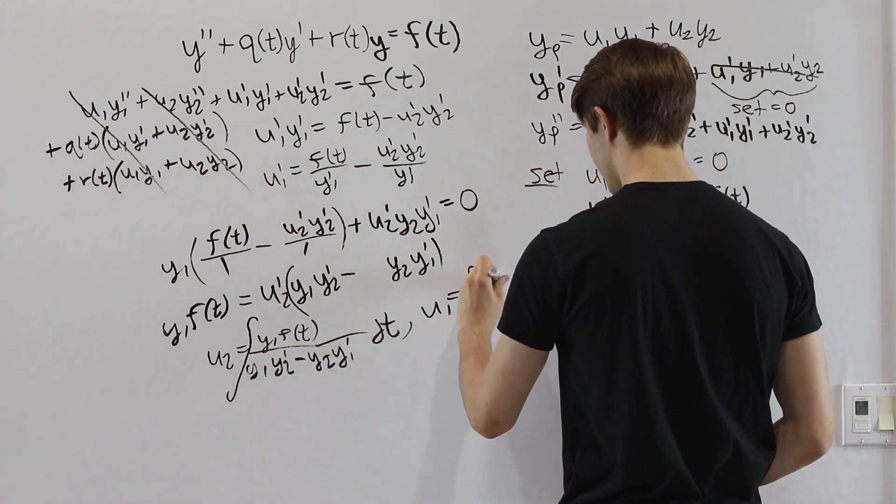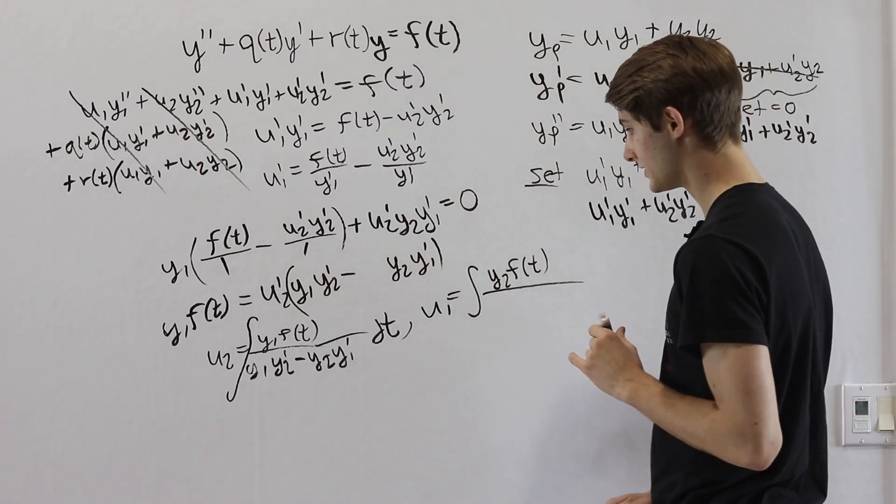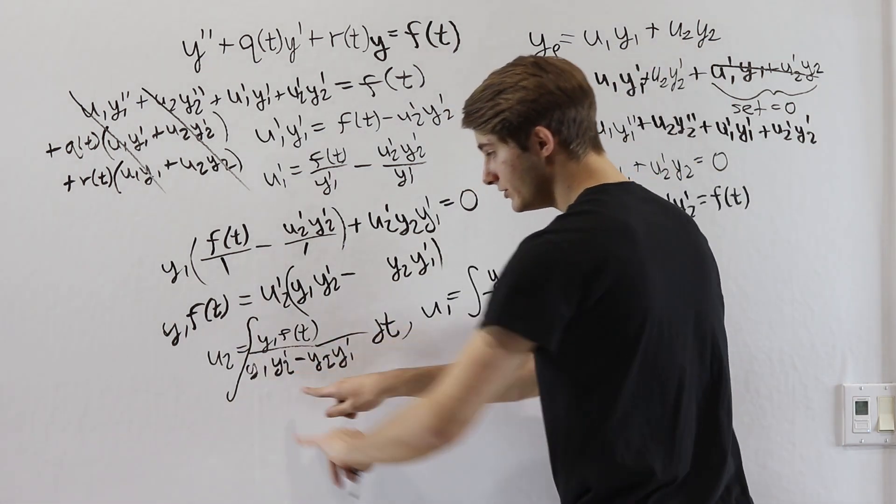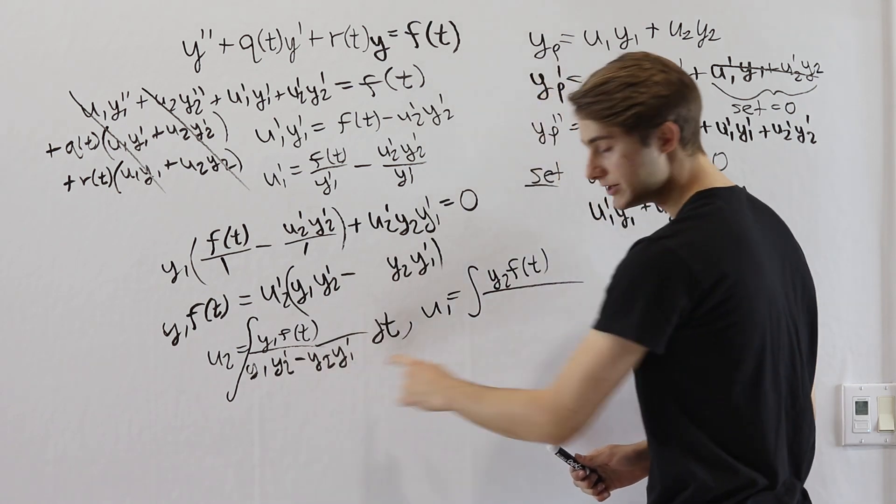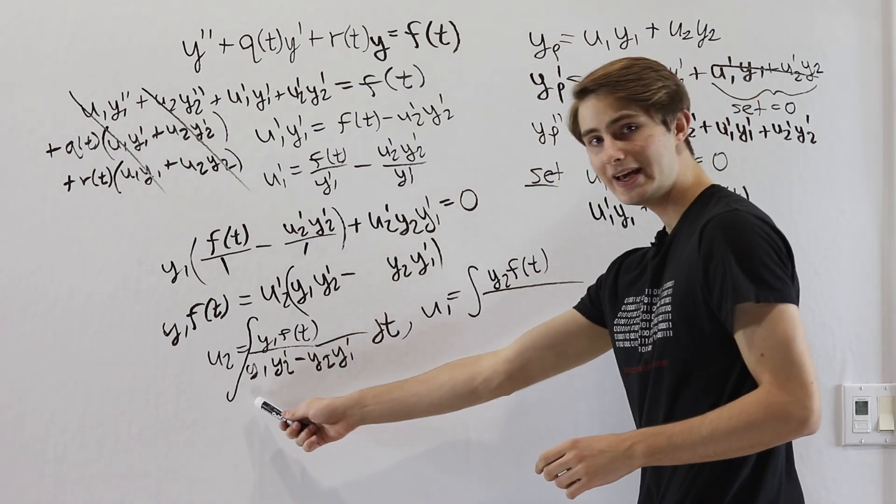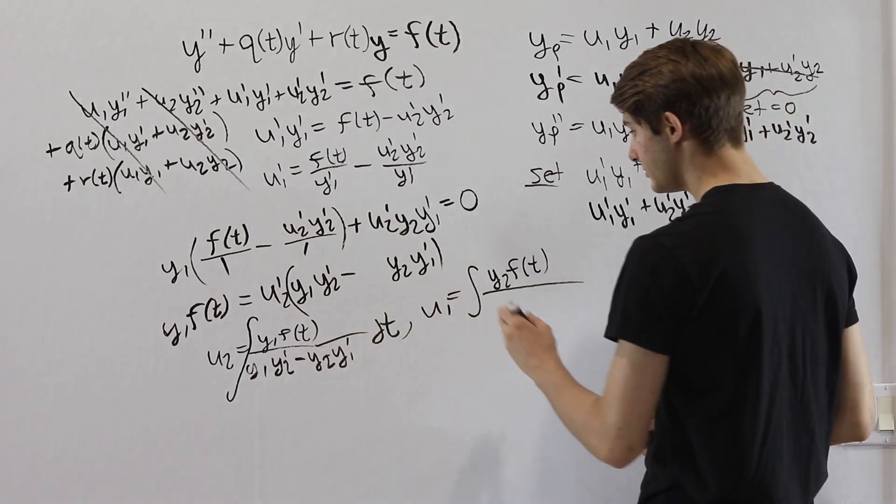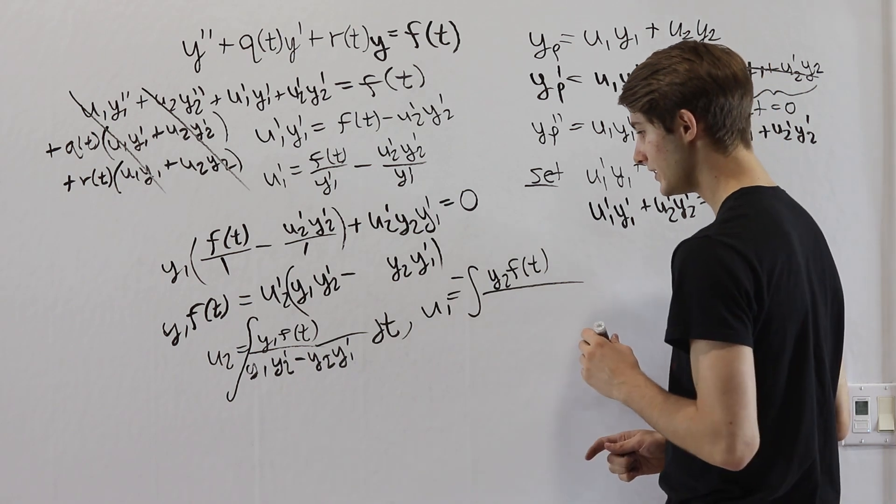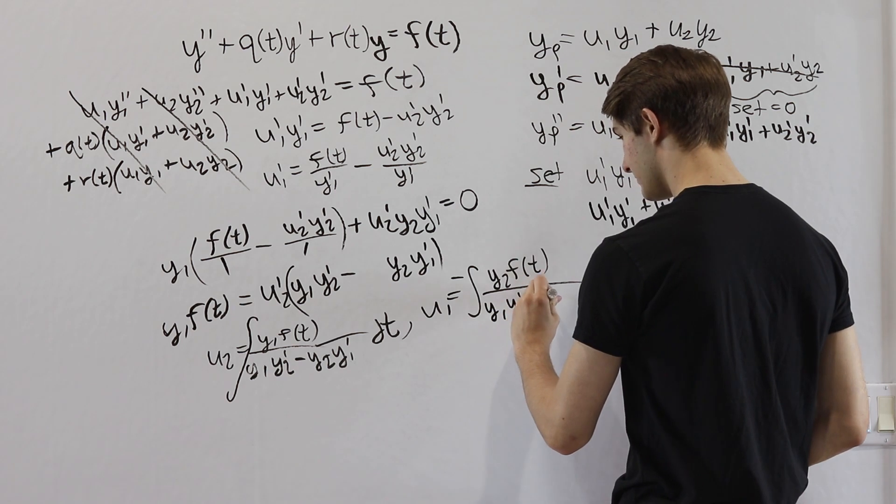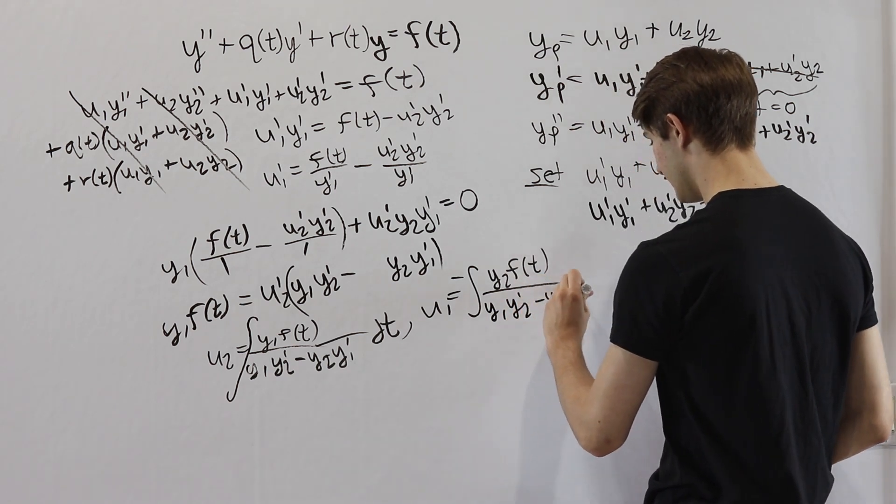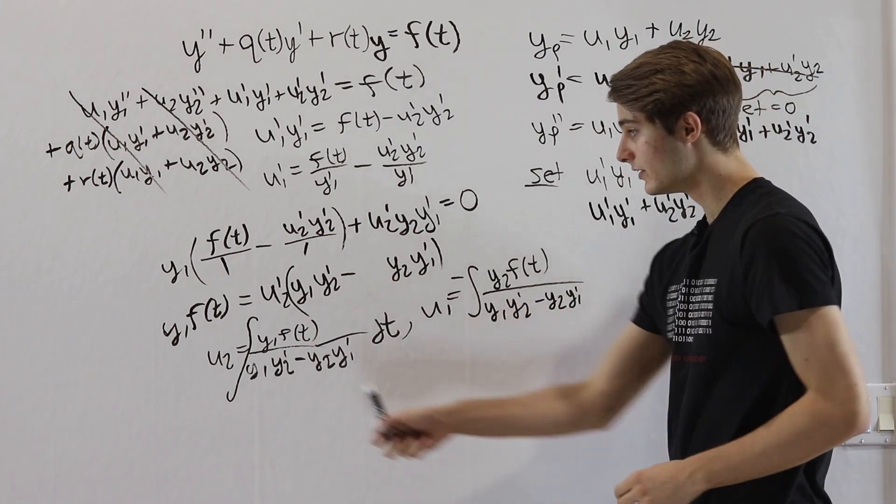For the second component we can do the exact same thing but just switch one for two because everything in here is symmetrical. So if we do that we will get u1 equals the integral. Notice on the top here we have y1 for u2. So for u1 we will have y2f(t) and then on the bottom, I am going to do something a little different. If we switch the ones and twos on the bottom here we will have y2y1 prime minus y1y2 prime.